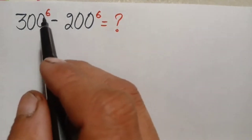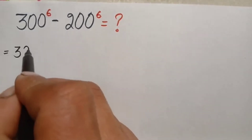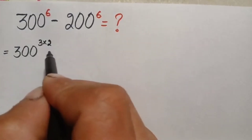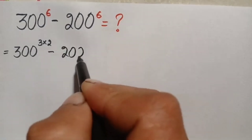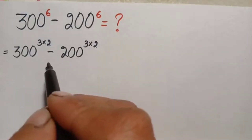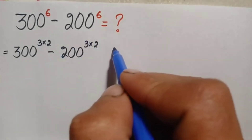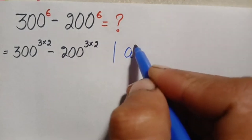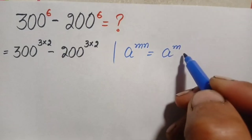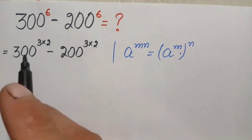First, we rewrite the exponents: 300 raised to power 6, where 6 can be written as 3 times 2, minus 200 raised to power 6, also with 6 written as 3 times 2. We will use the exponential identity: r^(m×n) can also be written as (r^m)^n. Using this identity on both terms: